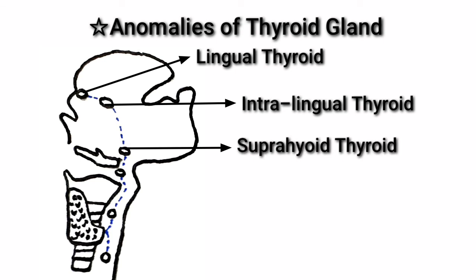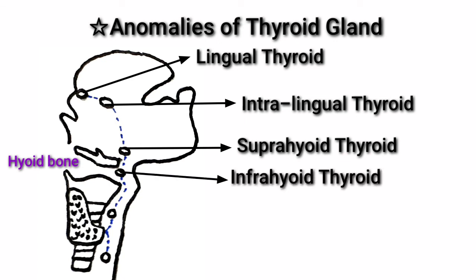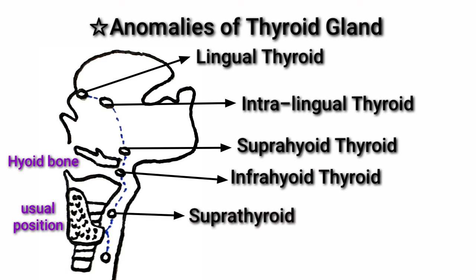If thyroid tissue is formed above the hyoid bone, this is called suprahyoid thyroid. If thyroid tissue is formed below the hyoid bone, this is called infrahyoid thyroid. This is the usual position of the thyroid gland. If thyroid tissue is present above the usual position, it is called suprathyroid. If thyroid tissue is present below the usual position, it is called infrathyroid.